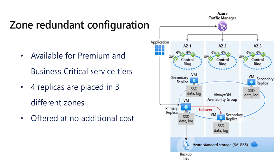Your Premium and Business Critical databases are spread across the three different Availability Zones within that region. So what this guarantees is if there is a data center outage or a zonal level outage, this protects your database from not being available within those larger span of outages.